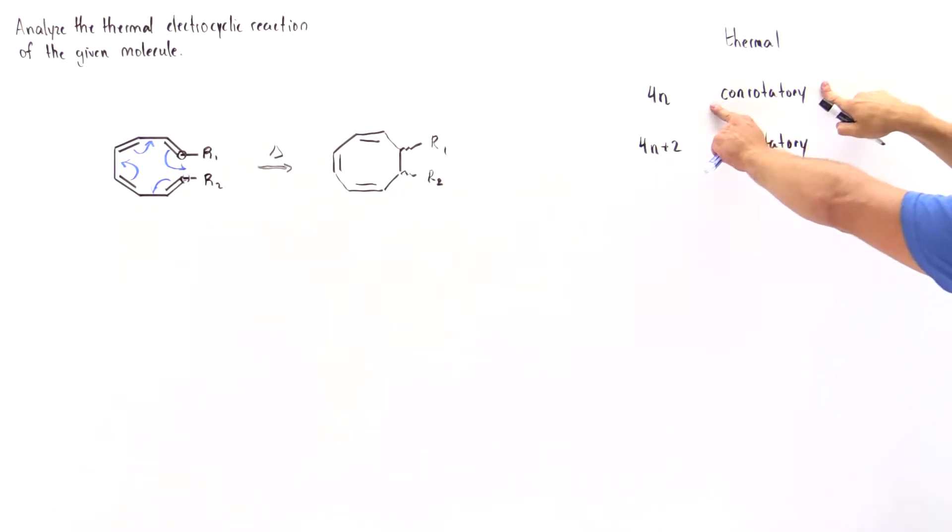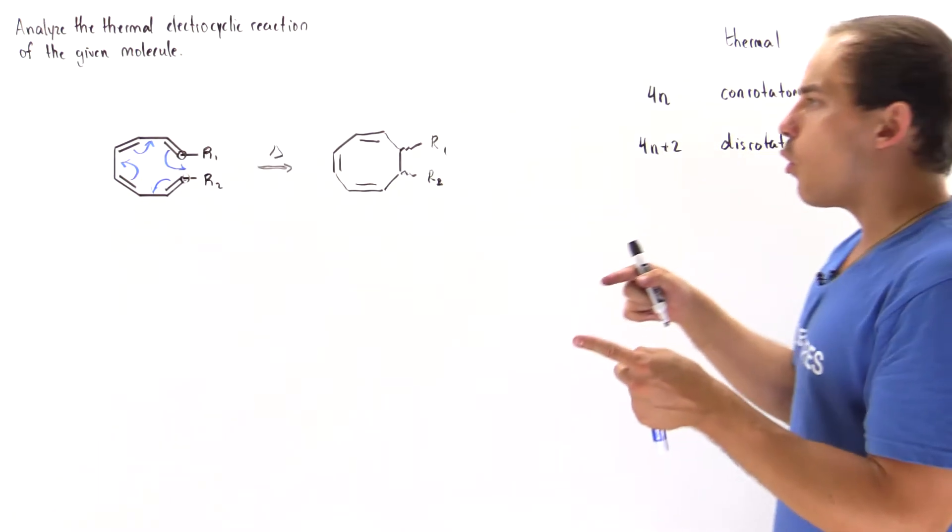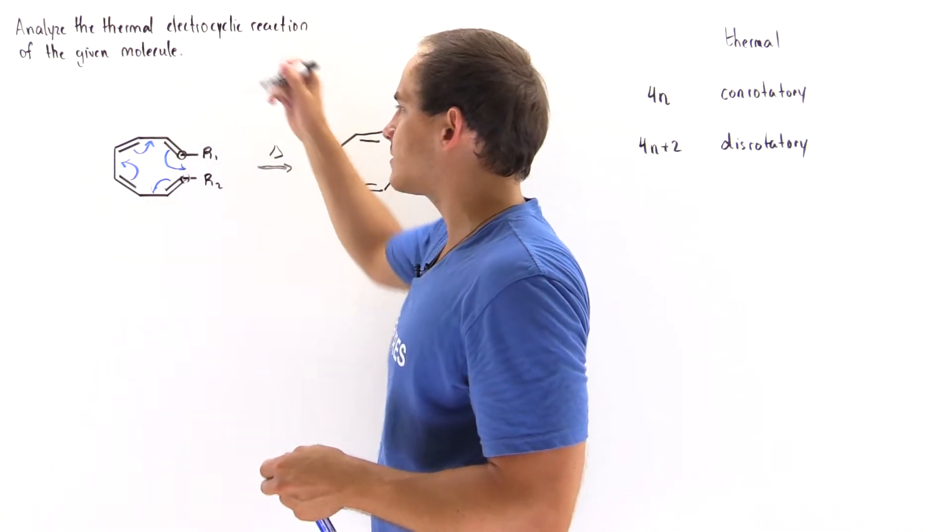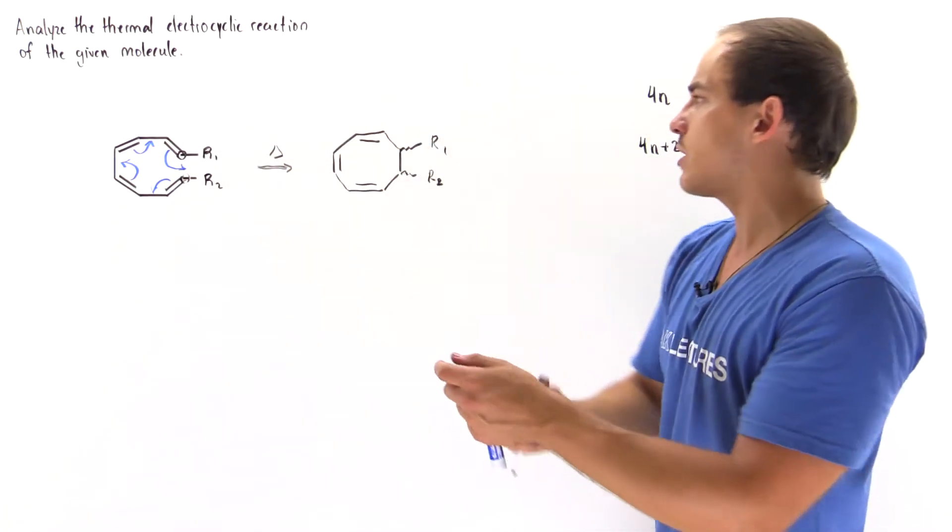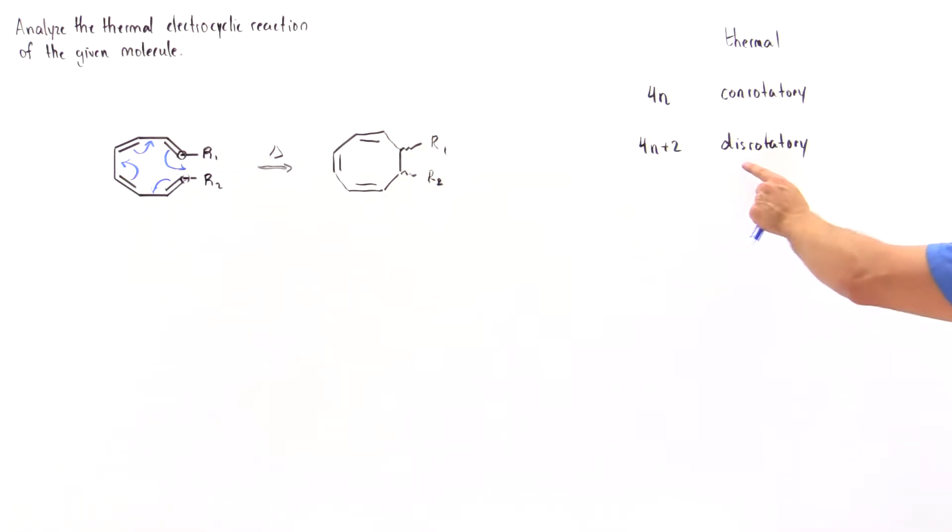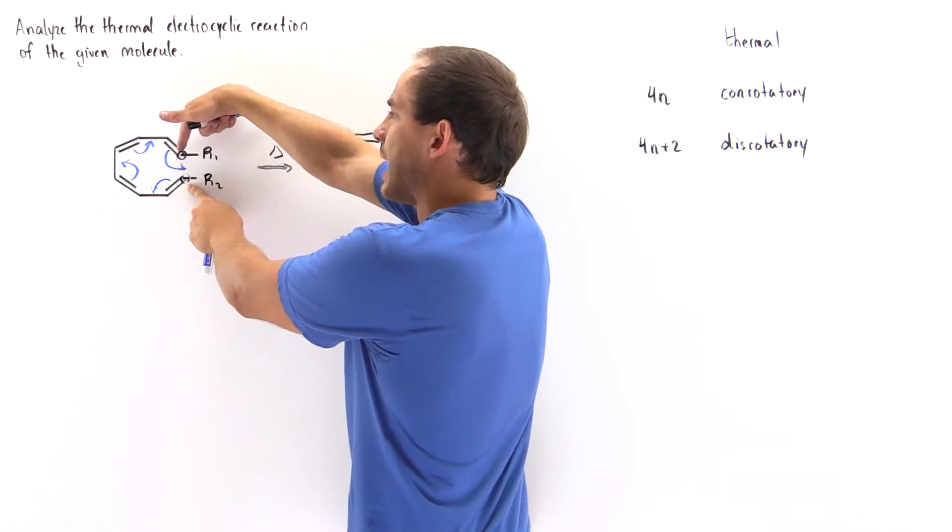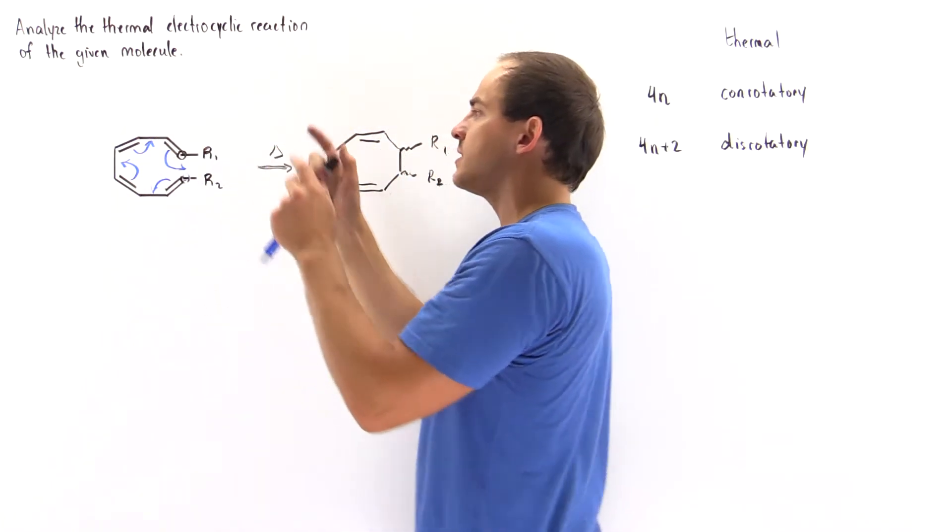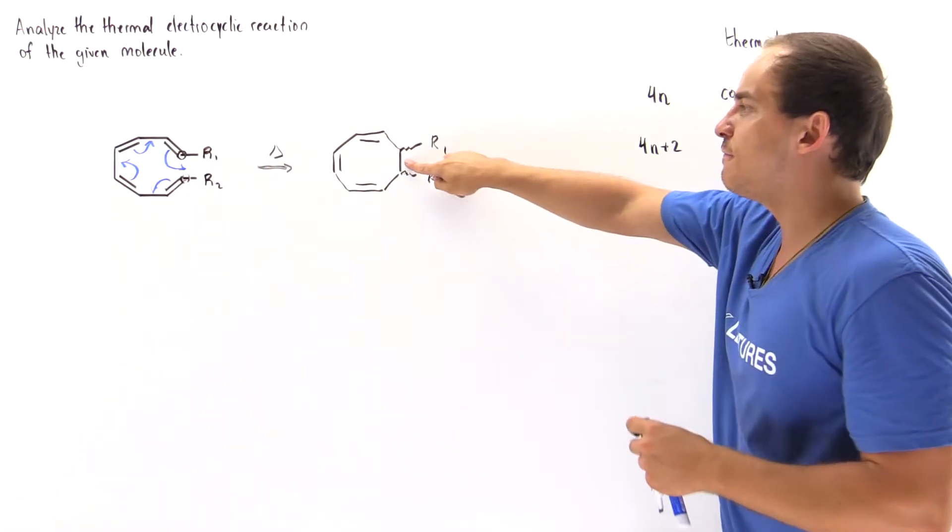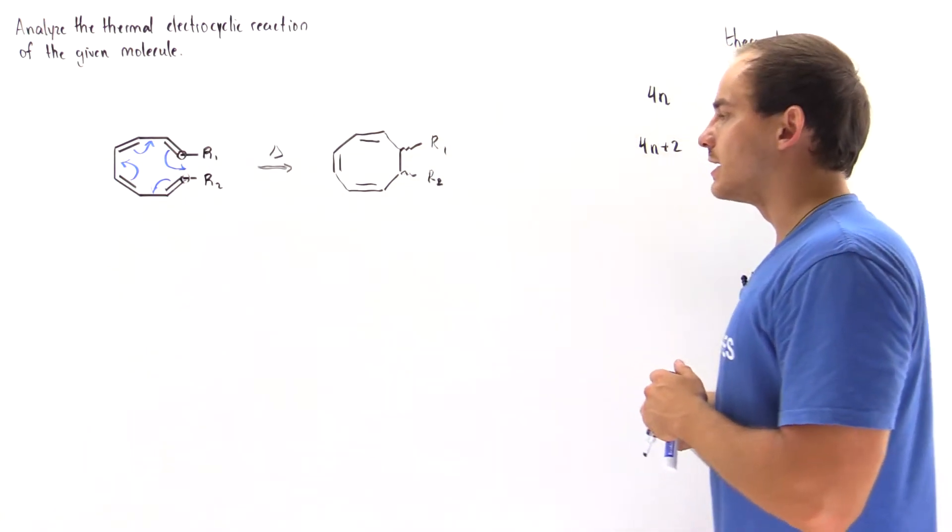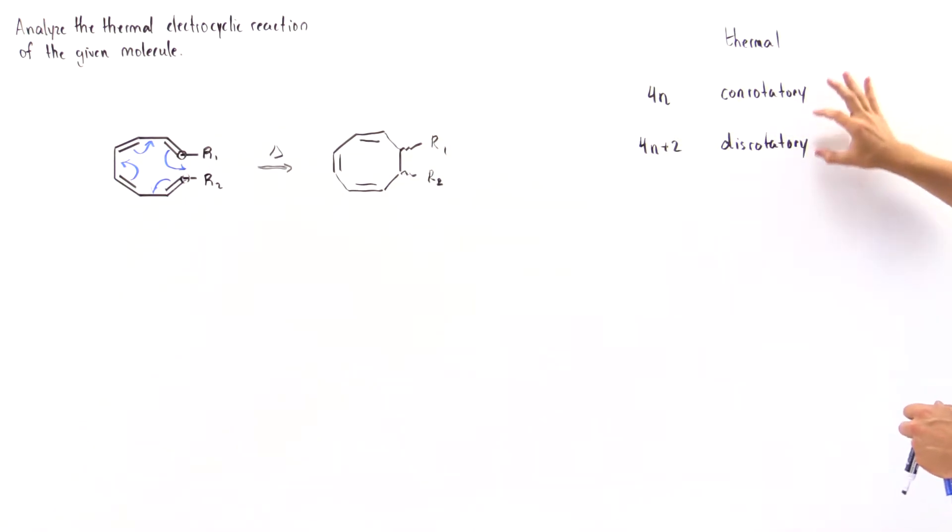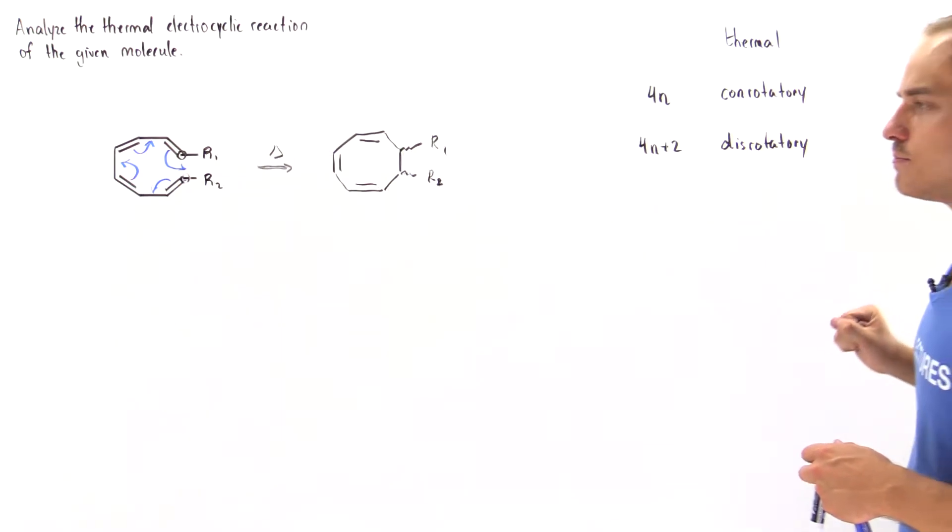So conrotatory means the two orbitals of the first and last carbon rotate in the same direction to form the actual bond. And disrotatory means the two orbitals of the first and last carbon rotate in opposite directions to form this sigma bond. The question is which rotation is actually observed?